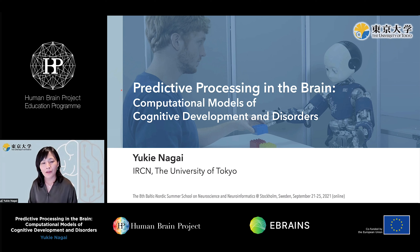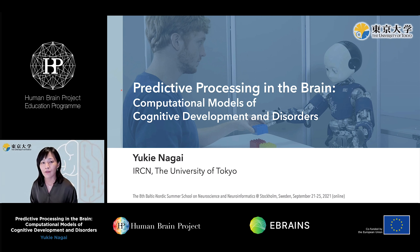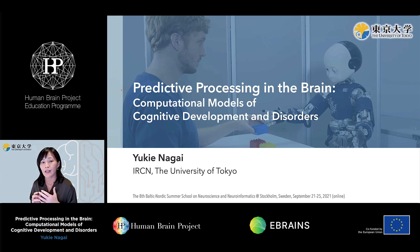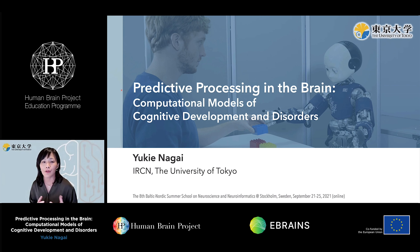What I'm going to talk about is predictive coding as a unified theory of the brain. We have been investigating to what extent this theory can account for cognitive development in humans and also in robots. I'm working on computational neural networks and robotics, but I hope that our computational approach can also help you understand the underlying neural mechanism for human cognition.